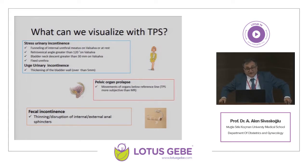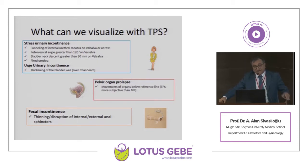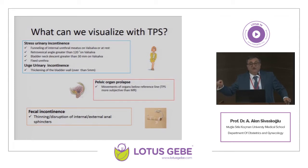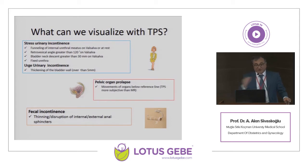If the organs are moving below the reference lines, we can confirm rectocele, enterocele, cystocele, or similar conditions. For fecal incontinence, ultrasonography can show thinning and disruption of the internal or external anal sphincters. Before and after surgery, you can objectively document that the patient was healed through comparing measurements.